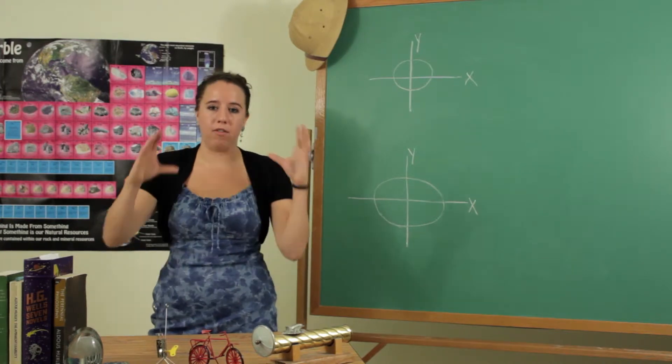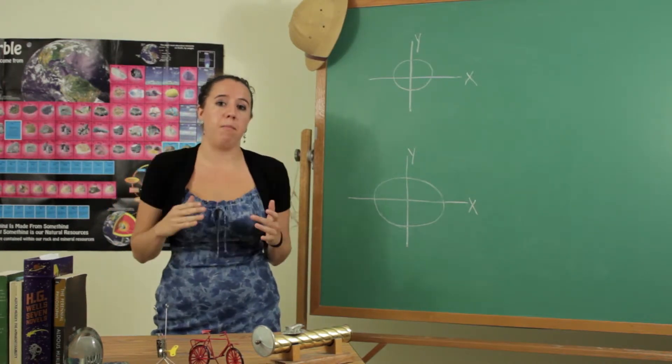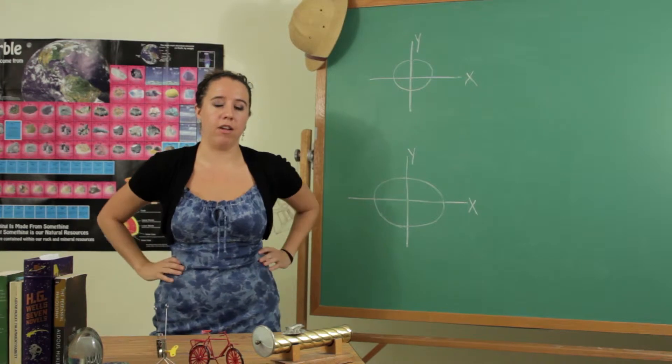You can actually think of an ellipse as kind of a squashed circle and the mathematics that represent it actually reflect that.